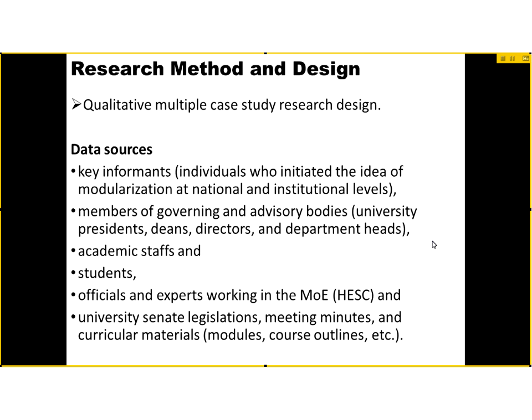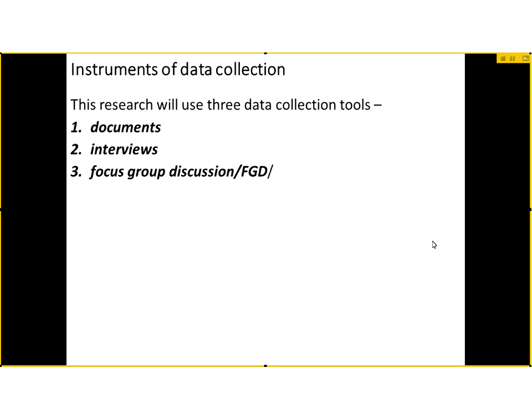These are the research methods. I use a qualitative multiple case study. I am going to select three universities from three generations — first, second, and third generation — divided based on the history of their establishment. I will select one university from each and analyze each case, then do a case-by-case analysis. Data sources are key informants and members of university governing bodies — university presidents, deans, directors, department chairs, academic staff, teachers, and students. I will also interview officials from the Ministry of Education and use documents from both the administration and the government.